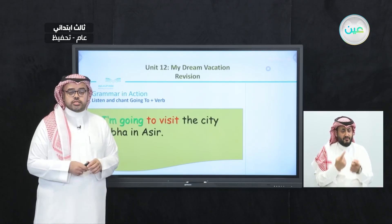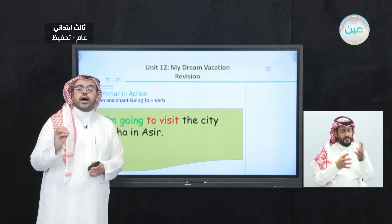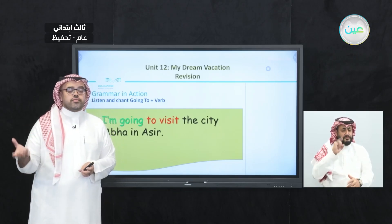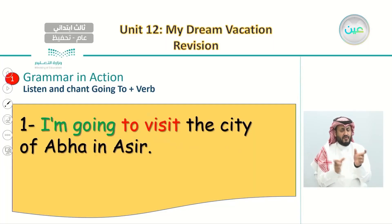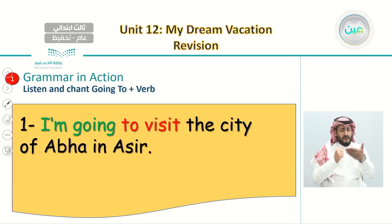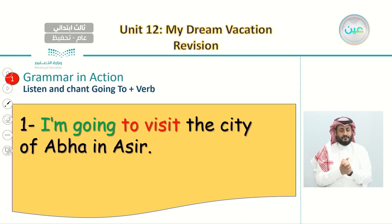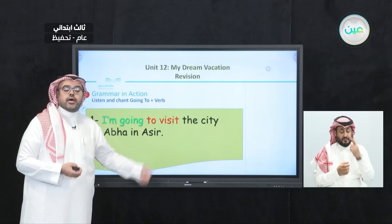Now let's listen to the first sentence and explain how we use 'going to' and the verb that follows it. Grammar in action — listen and chant: going to plus a verb. Number one: I am going to visit the city of Abha in Asir. Here, someone is talking about their plan — a thing they want to do in the future, which is visiting Abha in Asir.